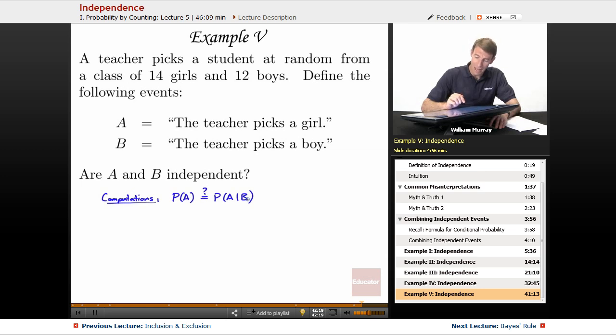So our probability of A is the probability of picking a girl where there's 14 girls total, and there's 26 students total. I'm getting that by adding 14 plus 12. So 14 out of 26 is the probability that we pick a girl.